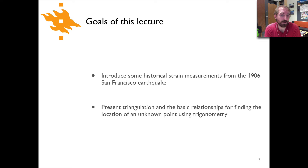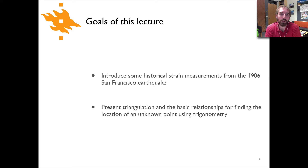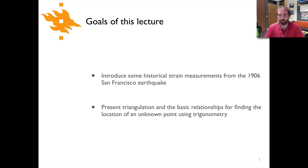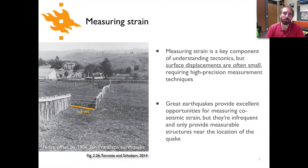We have two goals in the lecture. First we're going to look at some data from the 1906 earthquake near San Francisco that give us some sense of the deformation of the earth associated with that earthquake, and then we'll look at the method called triangulation, which is a basic calculation using trigonometry to find the location of an unknown point and how that's used to measure strain on the surface of the earth.